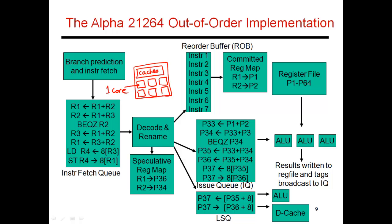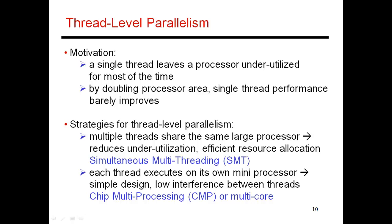So this is one way to increase the number of threads on your processor — by just having many different cores and having each one execute its own thread. This is called the chip multiprocessor, or the more common term is multi-core processor. So there are multiple strategies for thread-level parallelism — that is, to provide more parallelism in your processor by having multiple threads. One, as I just said, is the CMP or the multi-core approach.